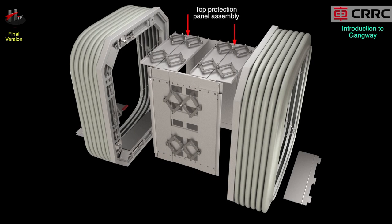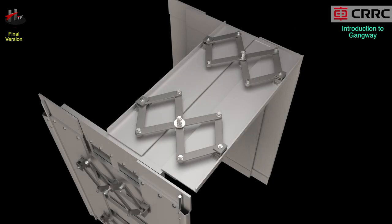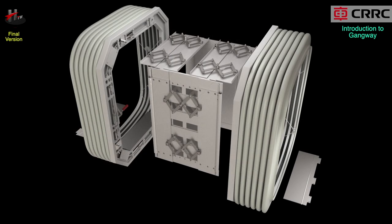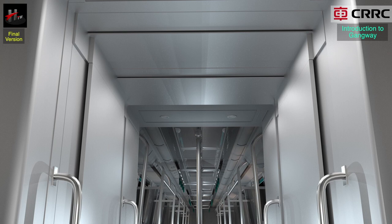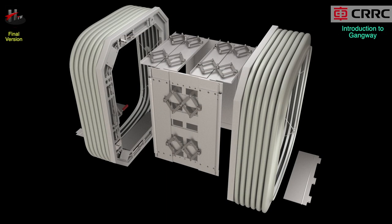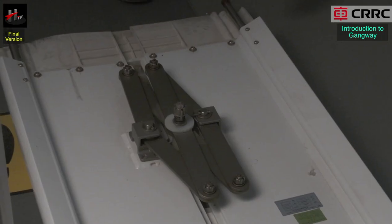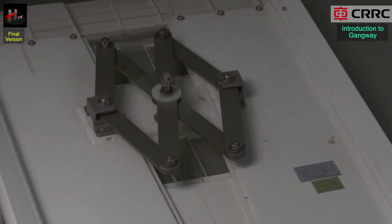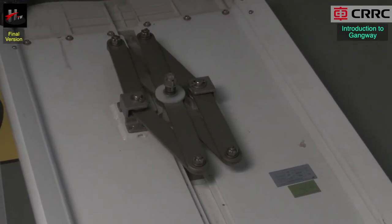The top protection panel assembly: each outer gangway assembly has one top protection panel assembly. After the two cars are coupled together, two sets of top protection panel assembly make up one complete ceiling cladding panel. The articulated connection rods adapt to the complex movements of the vehicle on curved terrains and straight lines.